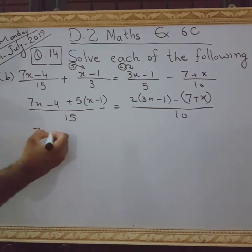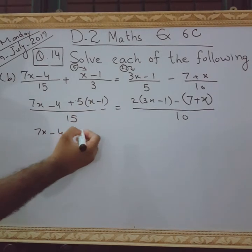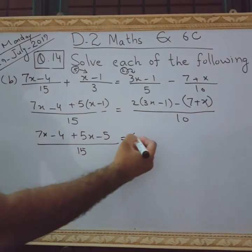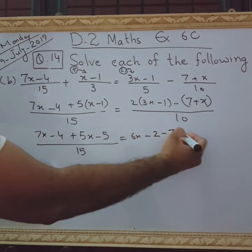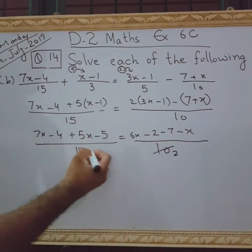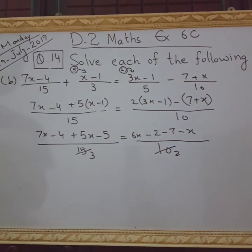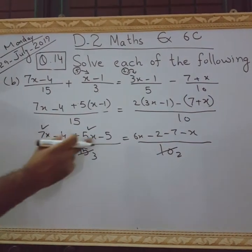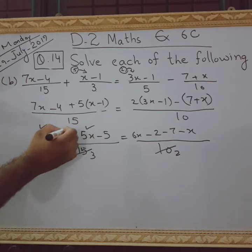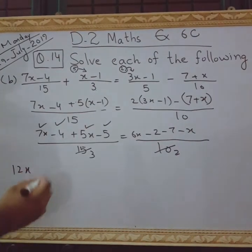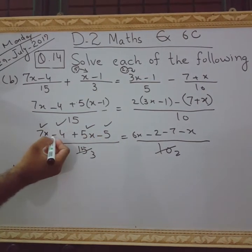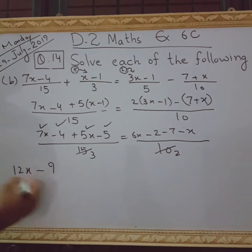7x minus 4 will be written as it is right now. Now, 5 will enter inside the bracket and will be written 5x minus 5, 5 ones are 5 over 15 is equal to 2, 3 times 6, 2 ones are 2, minus 7 minus x over 10. 5, 2 times 10, 5, 3 times 15. We can do this step as a shortcut 7x plus 5x. Both have positive signs that's why these will be added like it will become 12x. Minus 4, this one minus 4 and this one minus 5. We will use the sign of the bigger value which is minus 5 but we will add both of them because minus minus plus. So, we will gain this answer.